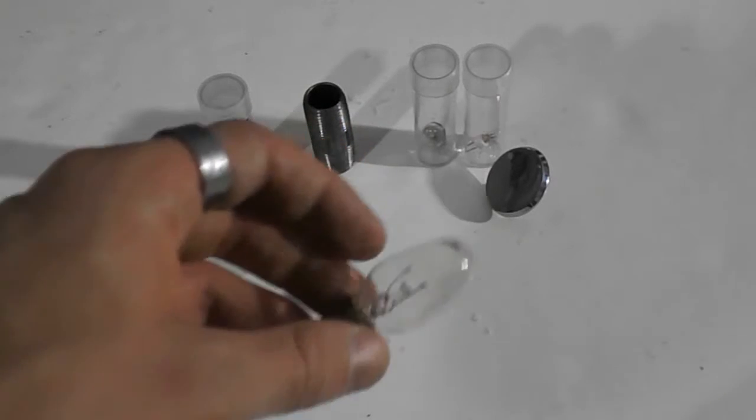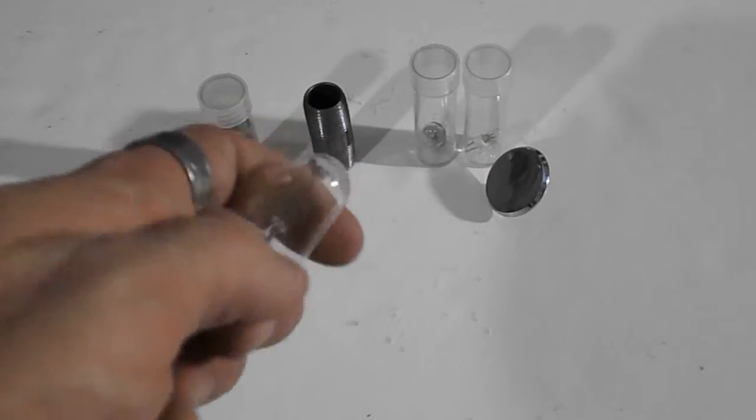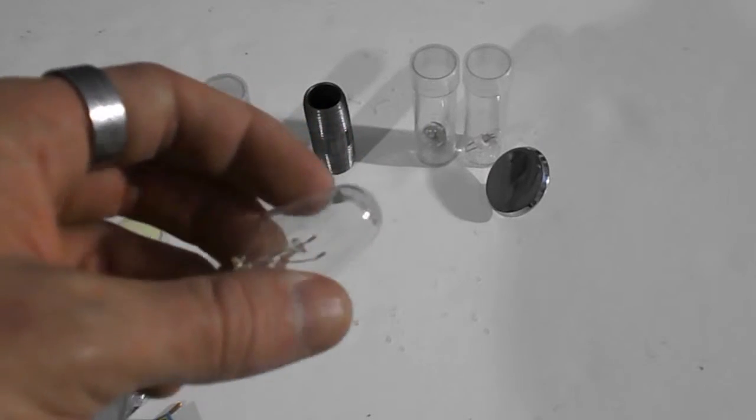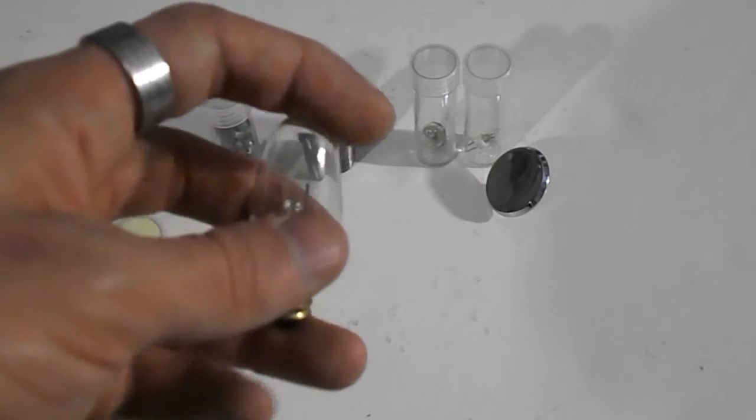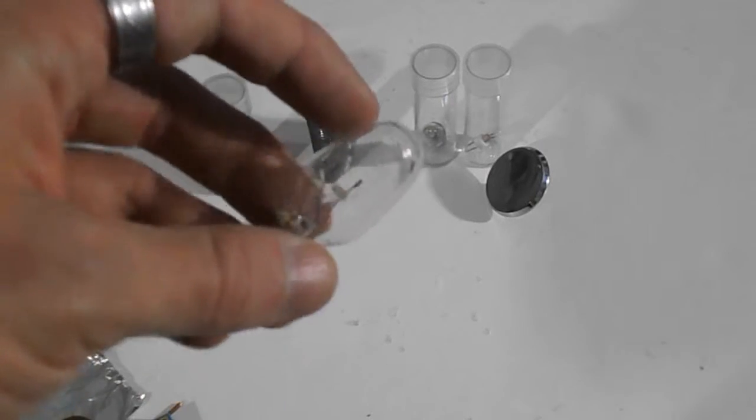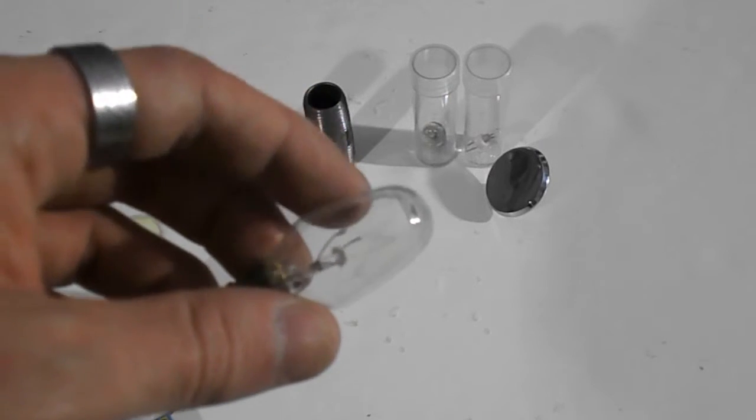Now a lightbulb is an interesting thing to get as far as element collecting is concerned. Not only is the filament tungsten, which is an element, but the gas used to fill the lightbulb is usually argon, which is another element. Argon is one of the noble gases.